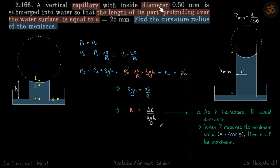A capillary with diameter is submerged in water such that the length of the part protruding over the water surface is h. Find the curvature radius of the meniscus. Since we are asked about the curvature radius and given the height of the capillary itself — not the rise of water — that means water has risen all the way to the top of the capillary.